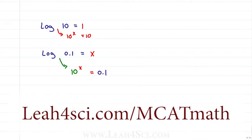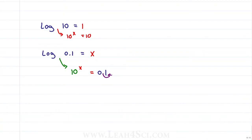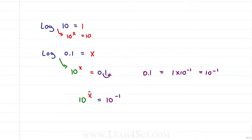As explained in the scientific notation video linked below, 0.1 is just one decimal space, meaning in scientific notation 0.1 is 1 times 10 to the minus 1, or simply 10 to the minus 1. Now look: if 10 to the x equals 10 to the minus 1, then x is just minus 1. When a number raised to a power equals the same base raised to a power, those exponents must be equal.